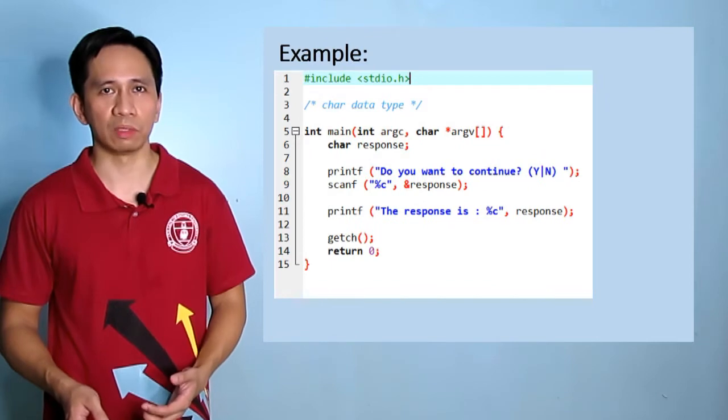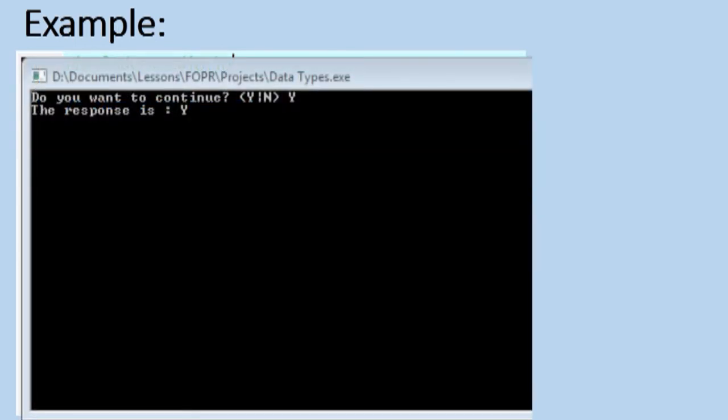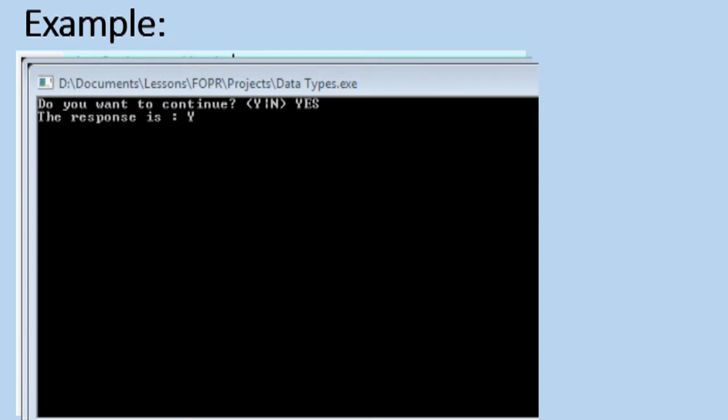Let us look at this example. Pause the video for a while and do it in Dev C++. Running the application, we see the result like this. What if we try to type more than one character? The application will truncate it to just one character.